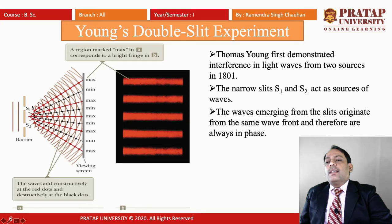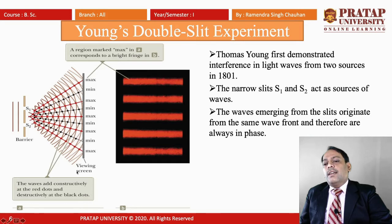By joining the points of the same phase, we find a fringe pattern on the screen. Points joined for the same phase give maxima, and black lines indicate minima — alternating maxima and minima from the centre outward on either side. The central maxima is called the zeroth order maxima, and the others are called first order, second order, and so on. Similarly, the minima are called first minima, second minima, and so on. This is Young's Double Slit Experiment.